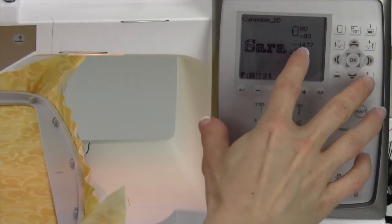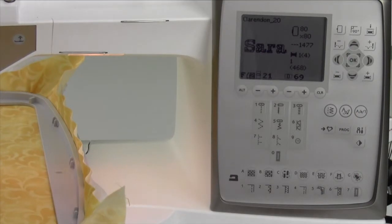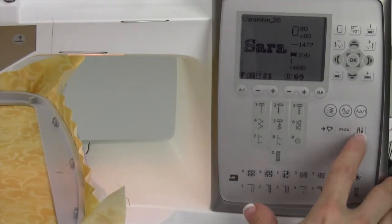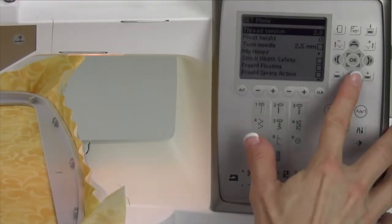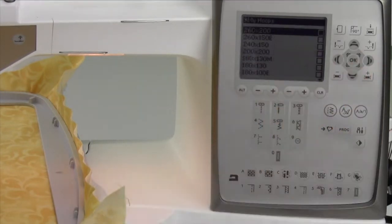If you're tired of always having hoops come up that you don't even own, this is the thing that I absolutely have my students do first thing: go into the set menu. That's the button with the little pliers and screwdriver, and we're going to arrow down all the way to where it says My Hoops. Arrow over to the side.